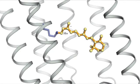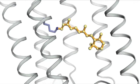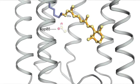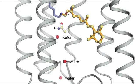In the excited state, retinal is positioned so that it can transfer a proton to an aspartate side chain, aspartate 85, that is positioned towards the extracellular side of the protein. Aspartate 85 quickly hands off the proton to the extracellular space via a bucket brigade of water molecules.